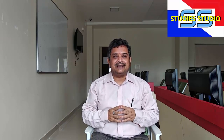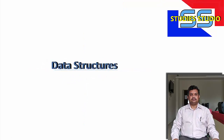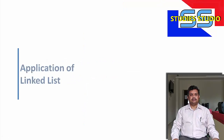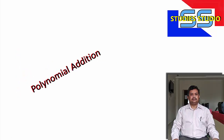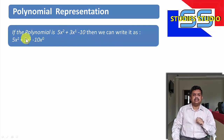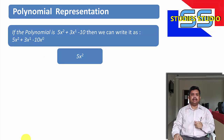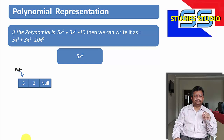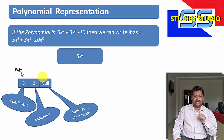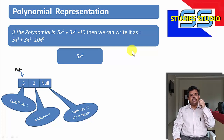So let us start polynomial addition with linked list. If a polynomial is given as 5x squared plus 3x to the power 1 minus 10, we can write it as 5x squared plus 3x to the power 1 minus 10x to the power 0. If I want to represent 5x squared in the form of a linked list, I will create a node with 5 as its coefficient, 2 as its exponent, and null, because only one term is there.